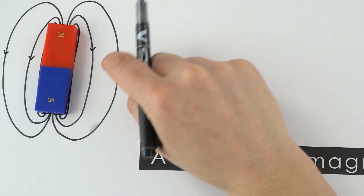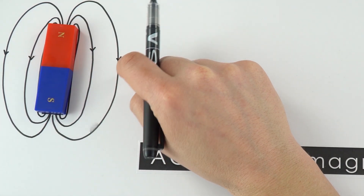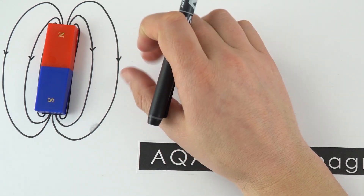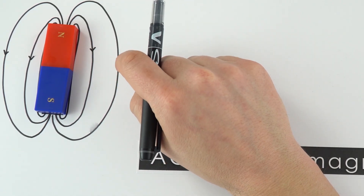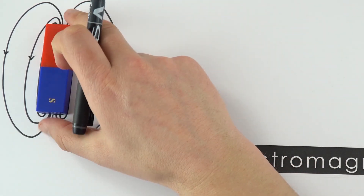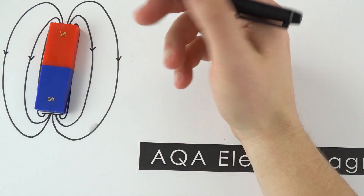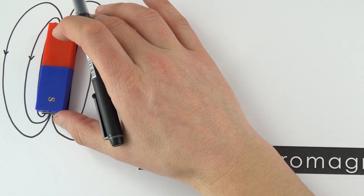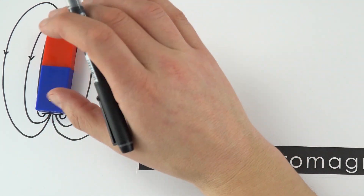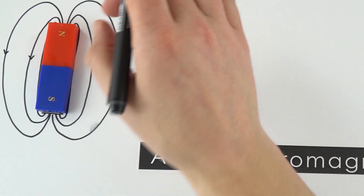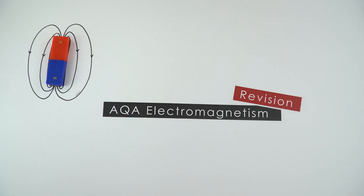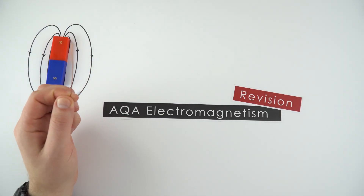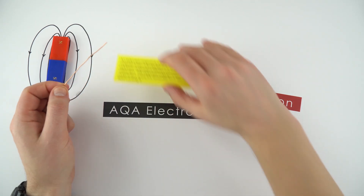This is also the shape of the magnetic field around the Earth, which is why a compass always points north when you're navigating. The evidence that we have a magnetic iron core in the centre of the Earth is because of the magnetic field that we can experience and detect every day. Something really interesting happens if you have a piece of wire connected into a circuit so that there's a current flowing.